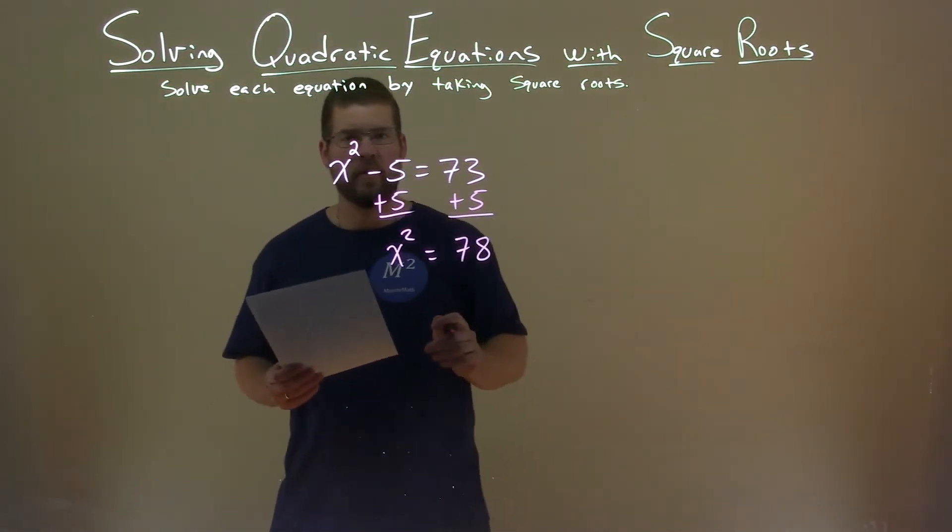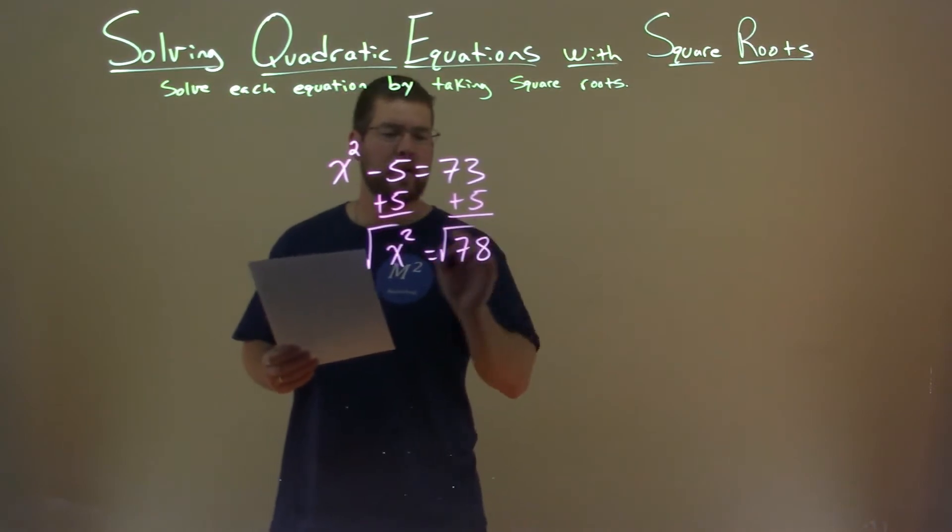Alright, so now we have x squared by itself. To get rid of the square, we take the square root of both sides.